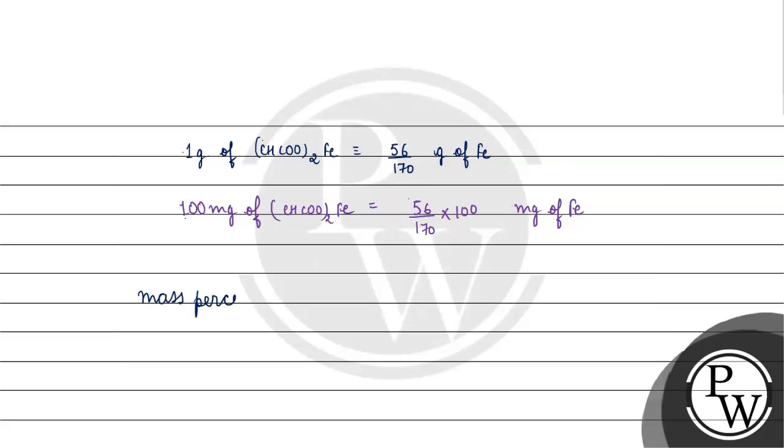What will we do? Mass of iron is 5600 by 170 mg of iron divided by 400 mg into 100. Milligram will be cut from milligram, right? We will cut zeros. 5600 by 170, these zeros will cancel out. We have 4, so 560 by 68.